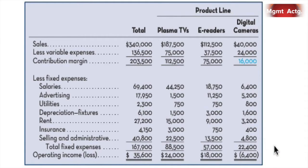Let's go through this example. At the very end, we're going to show how we can use segment reporting — what we've done before — traceable and common fixed costs, by categorizing our costs as traceable and common, so we wouldn't run into this problem. What we're seeing here is that when we just report things in this contribution format without separating traceable and common fixed costs, the fixed costs are allocated. We're losing $6,400 on digital cameras — let's try to fix that.